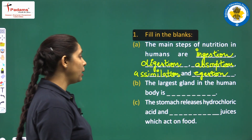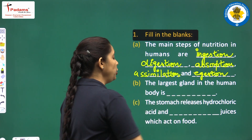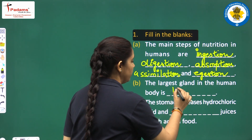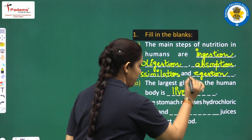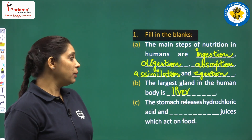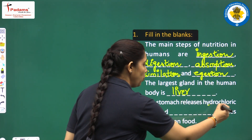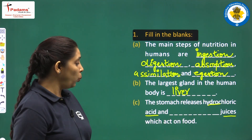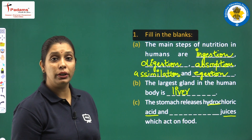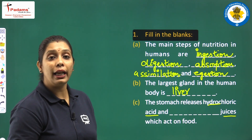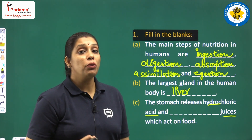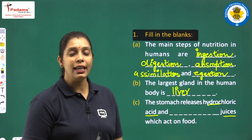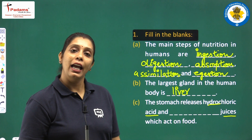Come on to the next fill in the blank: largest gland in human body. Yes, it is very easy — it is liver. Next: the stomach releases hydrochloric acid and digestive juice which act on food. We know the inner lining of stomach secretes three things: digestive juices, mucus, and hydrochloric acid.